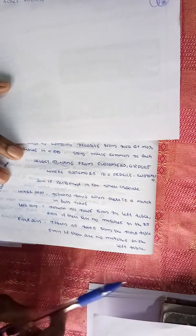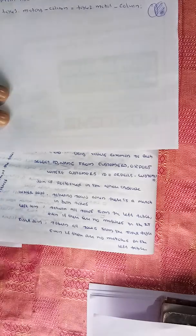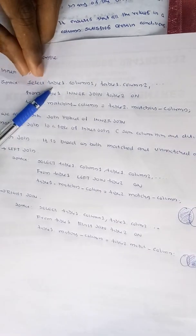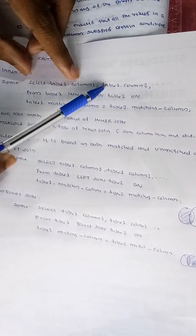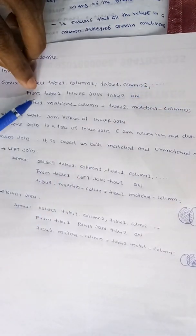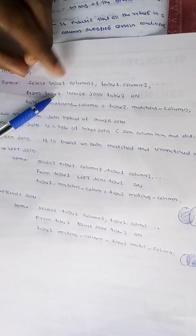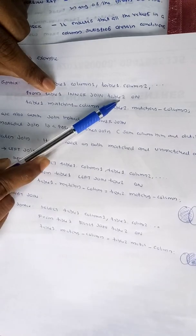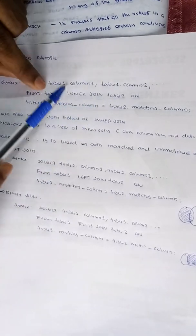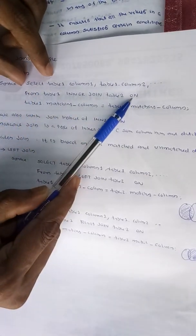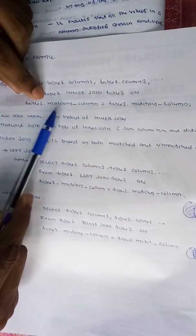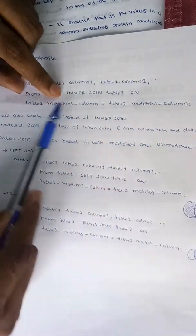This is the syntax for the inner join: SELECT table1.column1, table1.column2 FROM table1 INNER JOIN table2 ON table1.matching_column = table2.matching_column. The matching columns will match between the two tables.